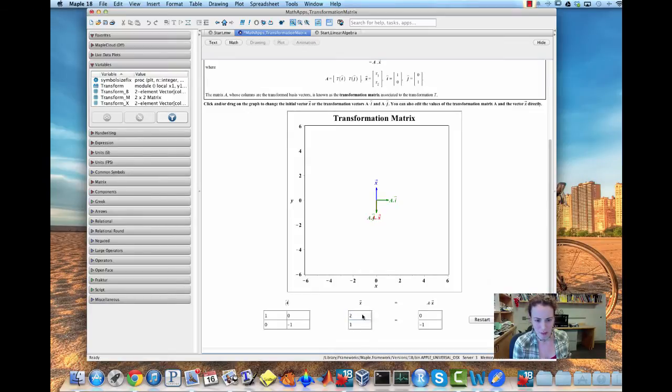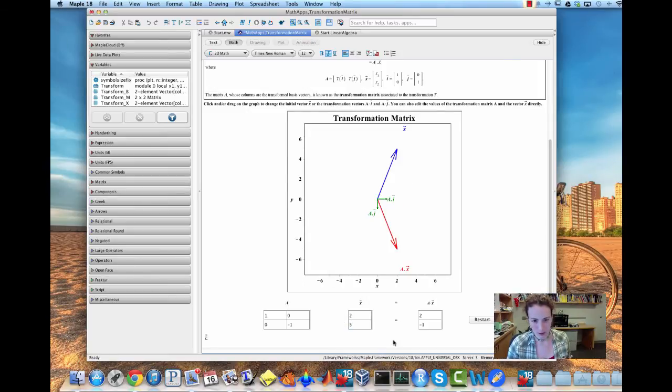So if we took a random vector, say (2,2.5), we see that this matrix (1,0;0,-1) and 0 along the anti-diagonal, reflected it along the line y equals 0.